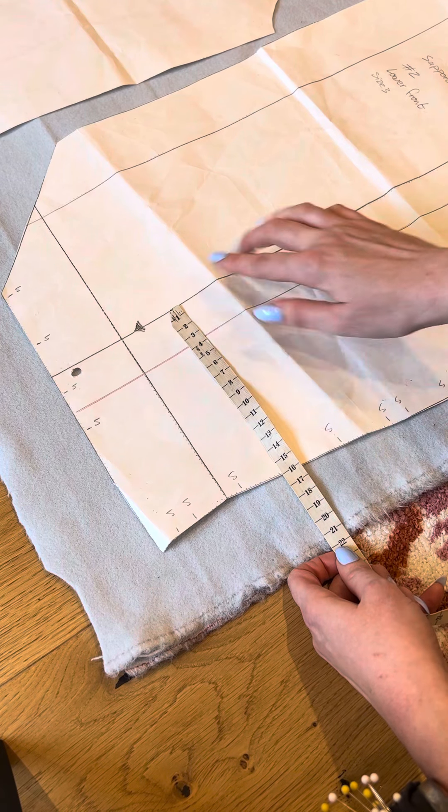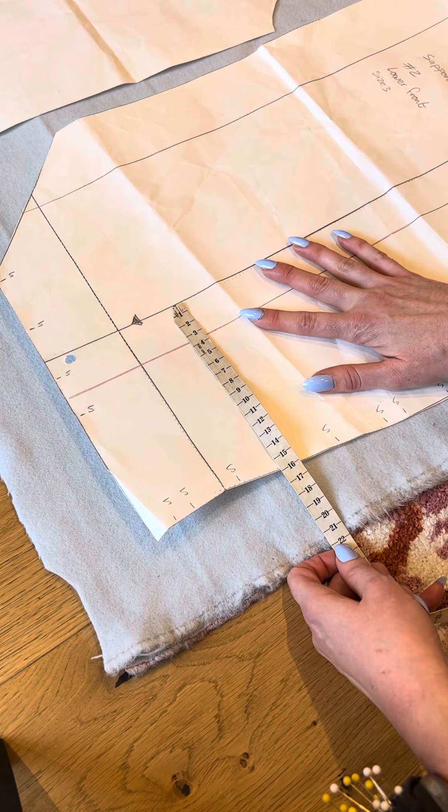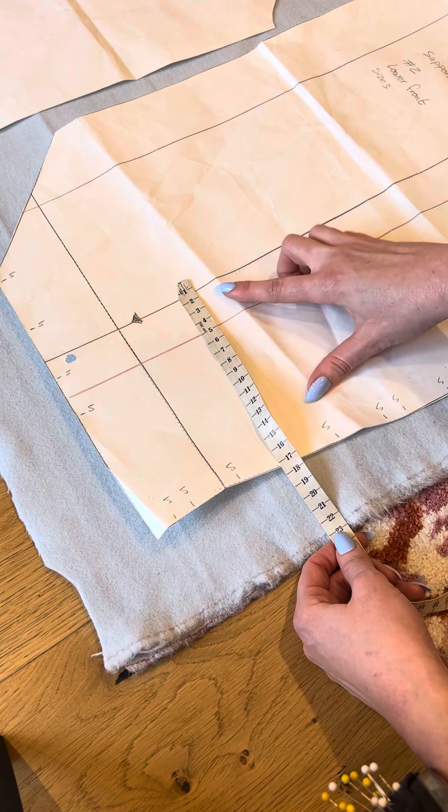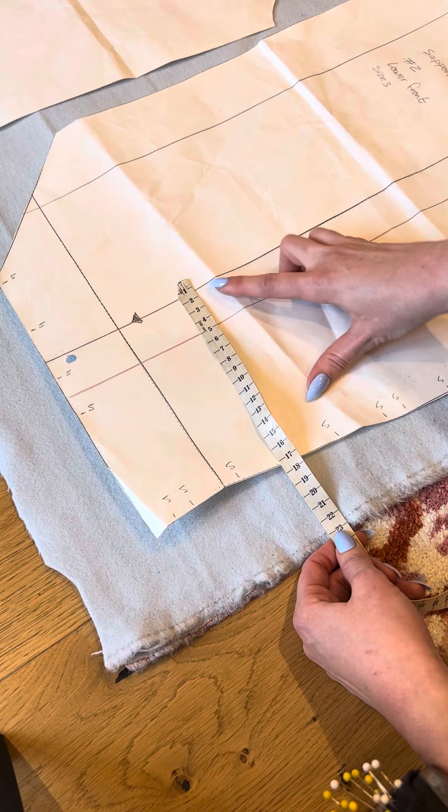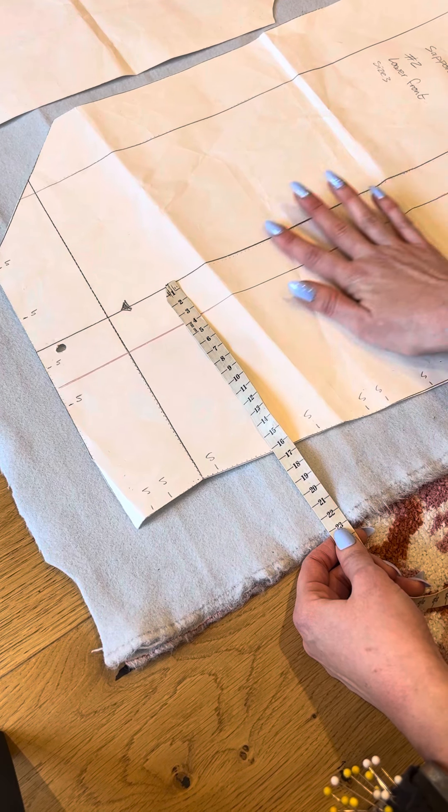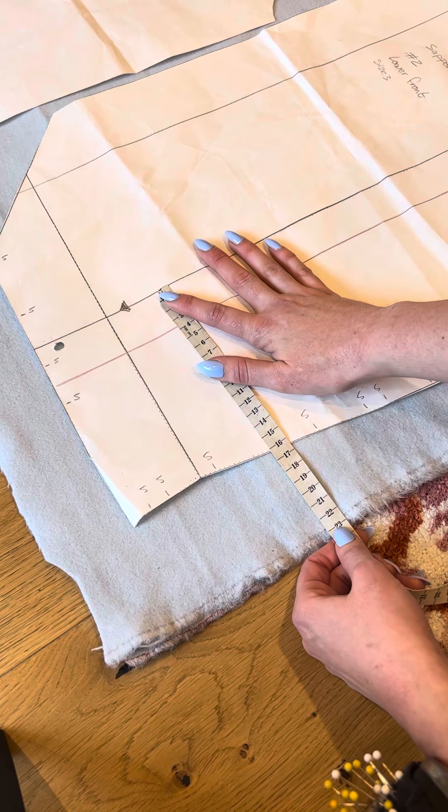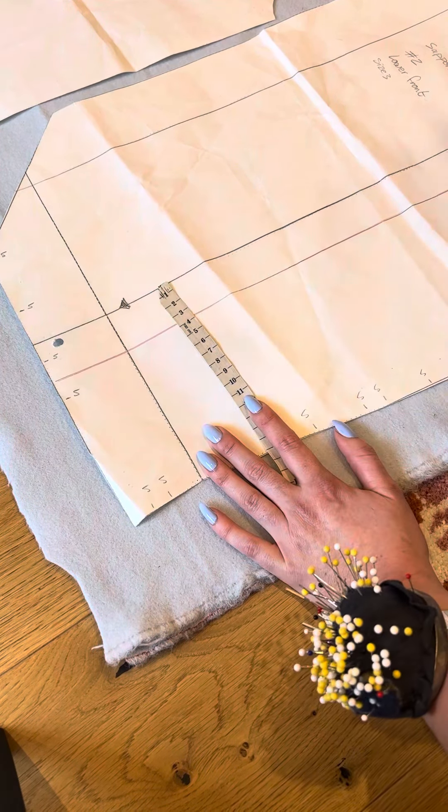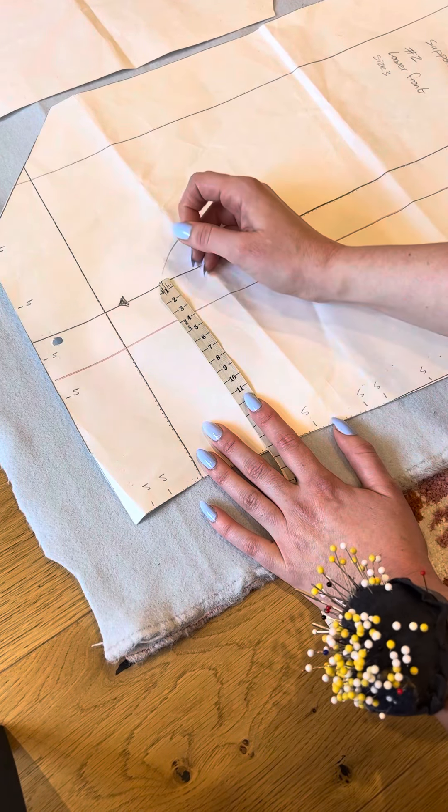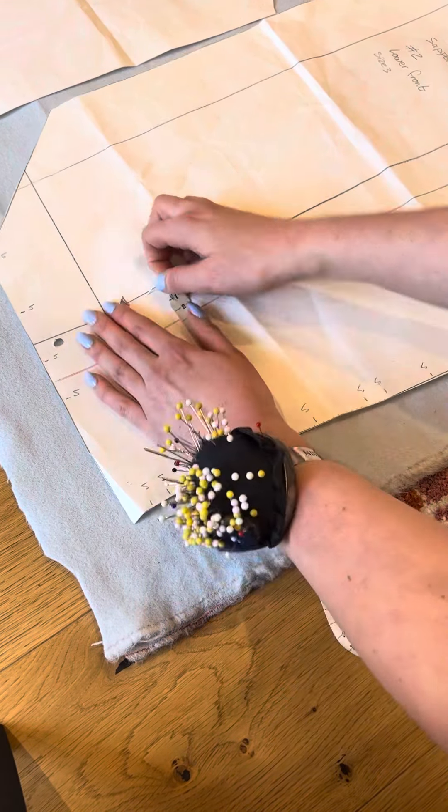I'm going to move that up to 23 centimeters so our line there matches up. That means the grain line at the top of our pattern piece and the bottom of our pattern piece are nice and level.